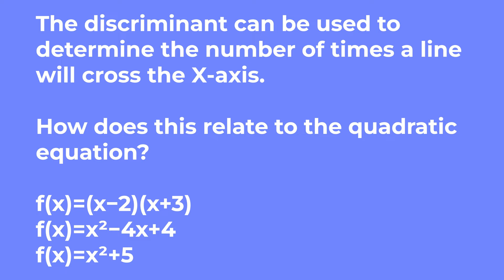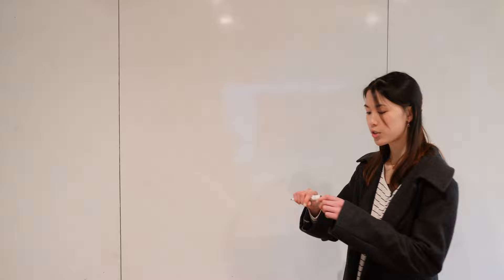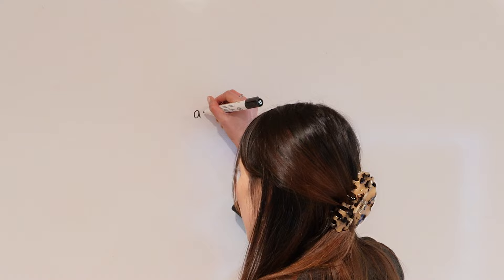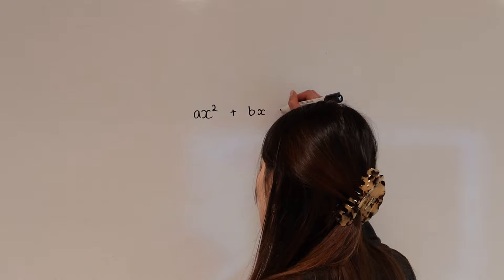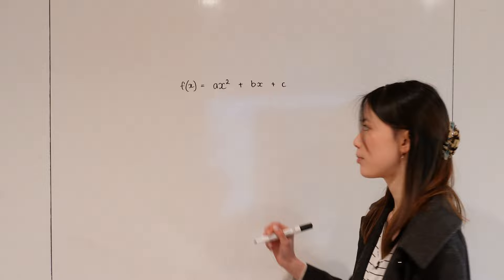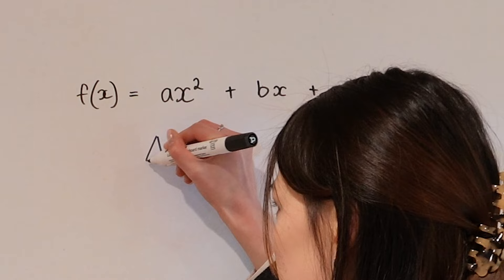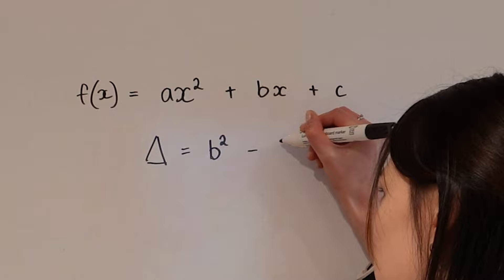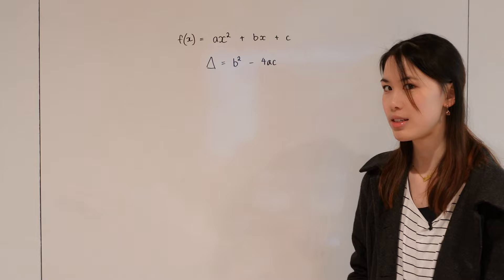We have a number of functions below. In order to answer this question, we must first understand what the discriminant is. For a quadratic equation ax² + bx + c, our discriminant will follow the formula — we usually represent it with the symbol delta, which looks like a triangle — b² minus 4ac. You might recognize this because it's present in the quadratic equation, usually under the square root.